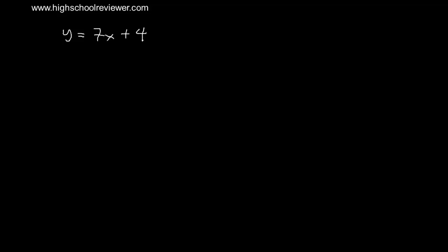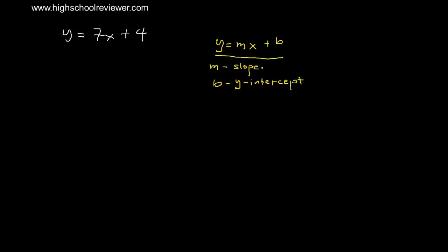Converting y equals mx plus b to ax plus by equals c. We have an example: y is equal to 7x plus 4. This is of the form y equals mx plus b, where m is the slope and b is the y-intercept. We are going to convert this to the form ax plus by equals c.